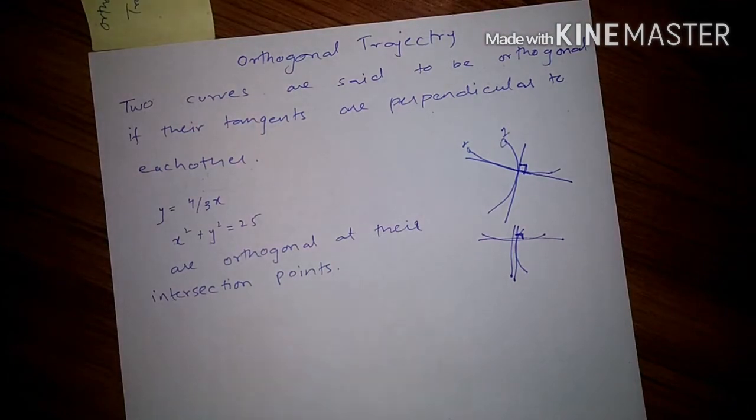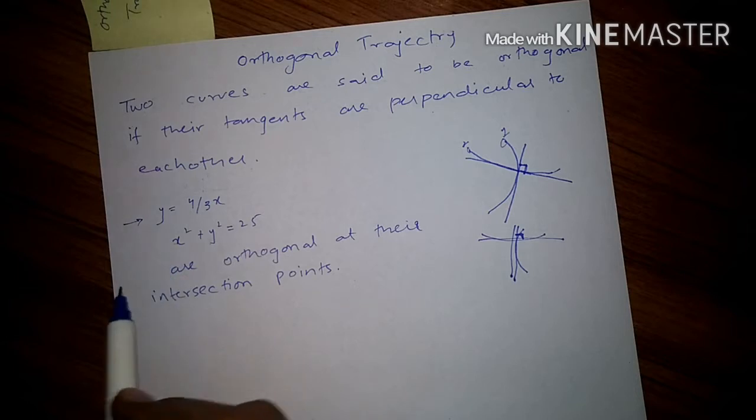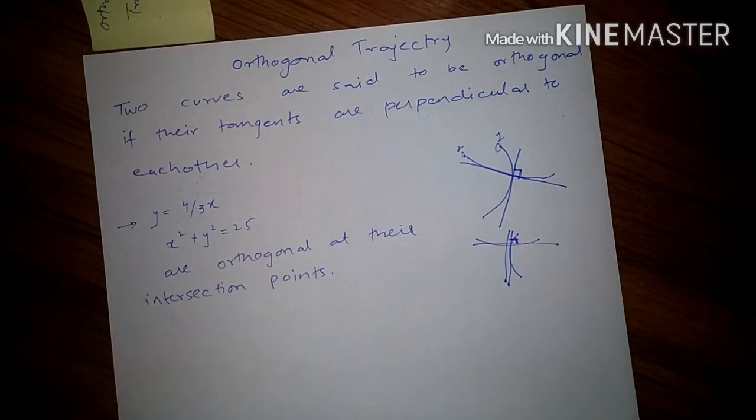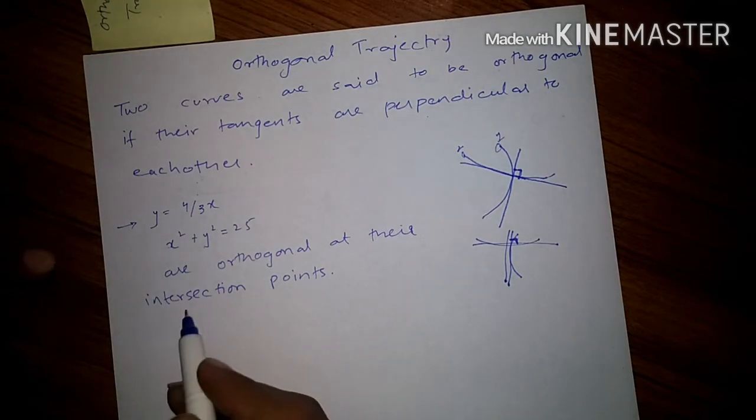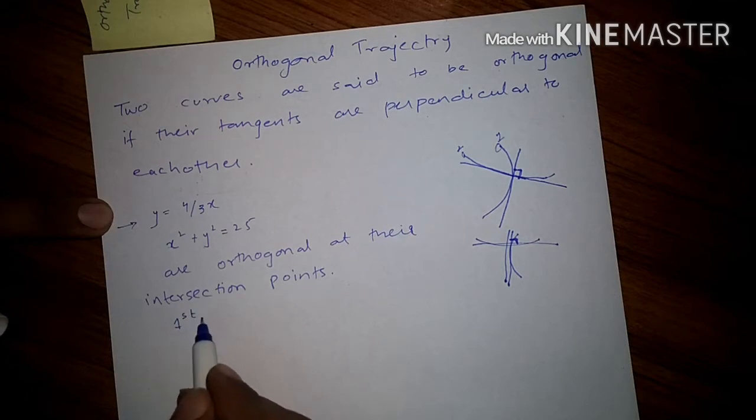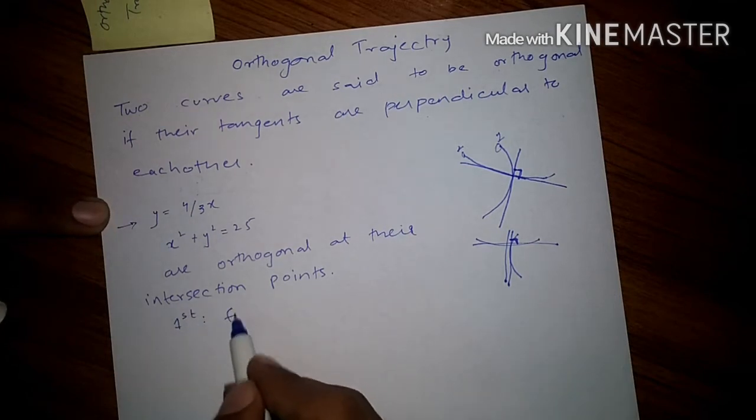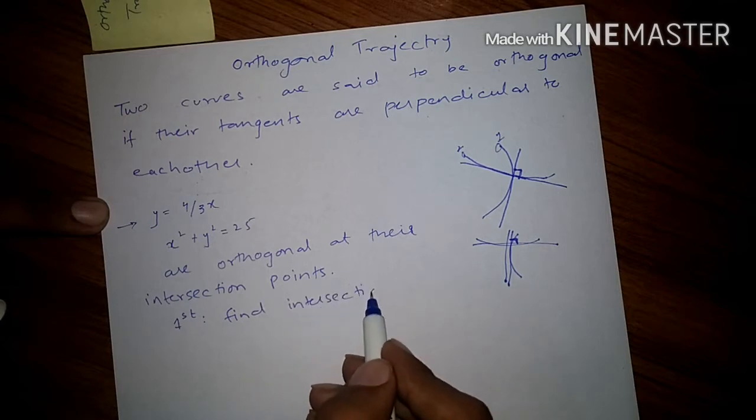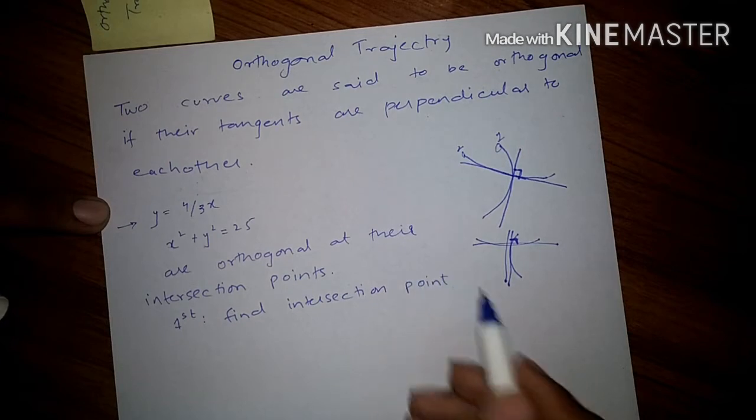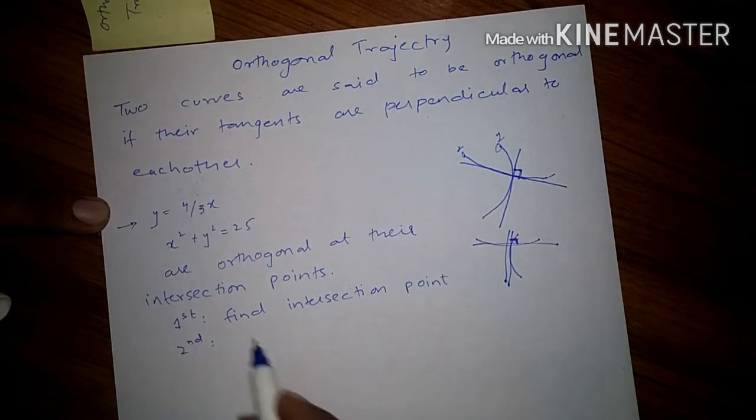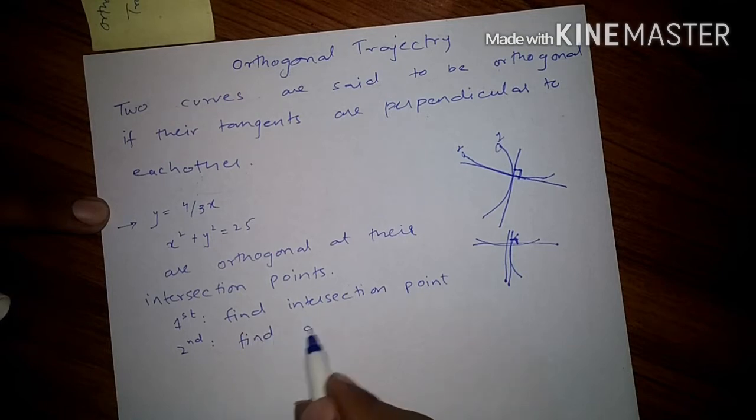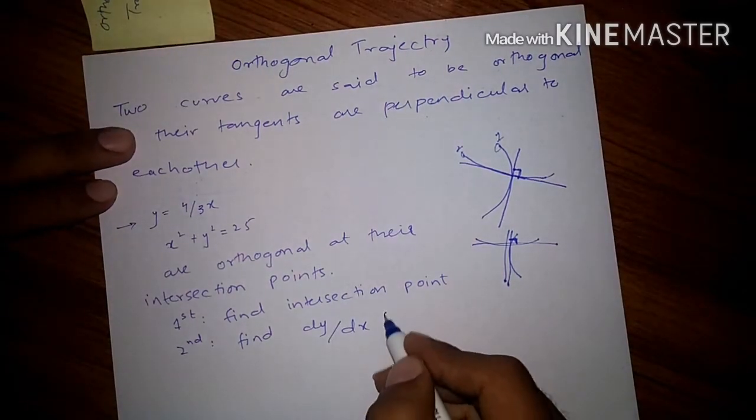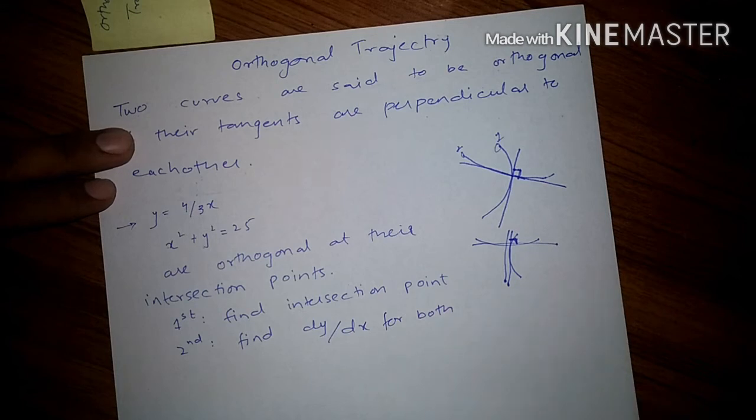Let's have a look at an example. The question we have here asks if these two equations are given, whether they are orthogonal at their intersection points. So first, find the intersection points, and second, find dy/dx for both.